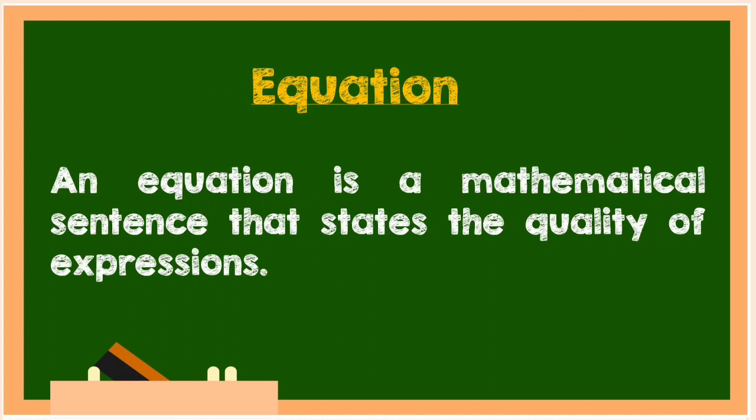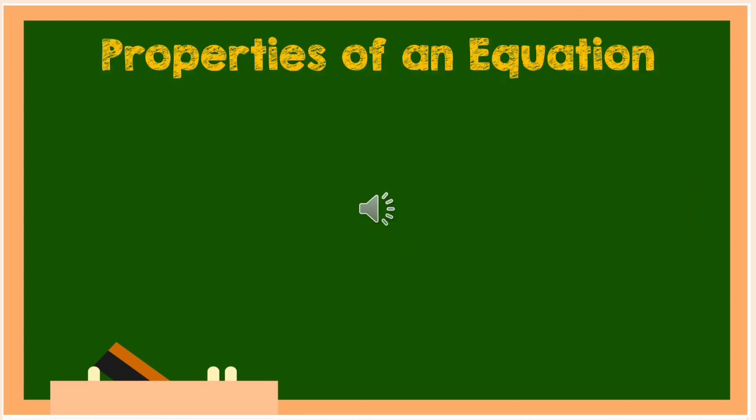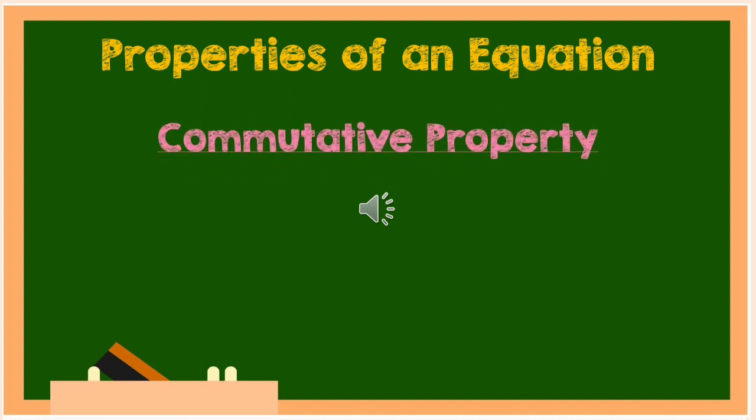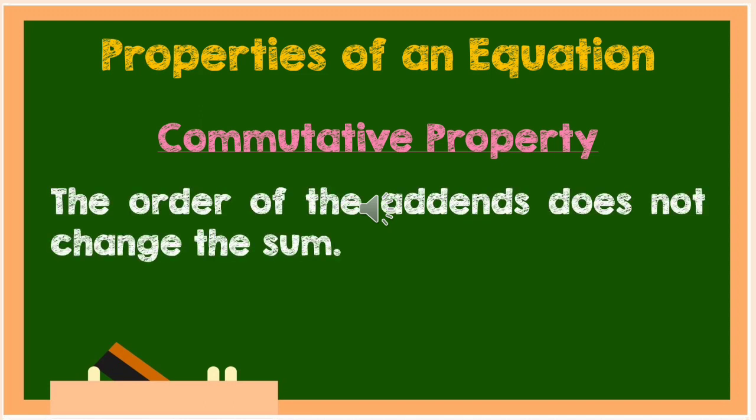Let us first define equation. An equation is a mathematical sentence that states the equality of expressions. There are different properties of an equation. First is the commutative property.